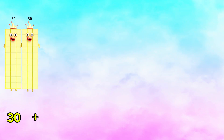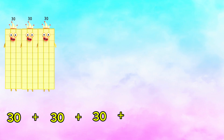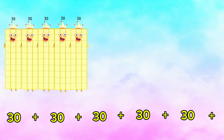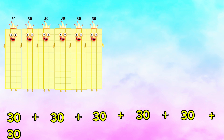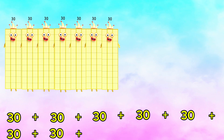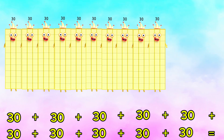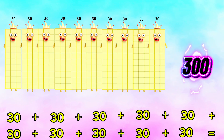Next, 30 plus 30 plus 30 plus 30 plus 30 plus 30 plus 30 plus 30 plus 30 plus 30 plus 30 plus 30 is equals to 300.